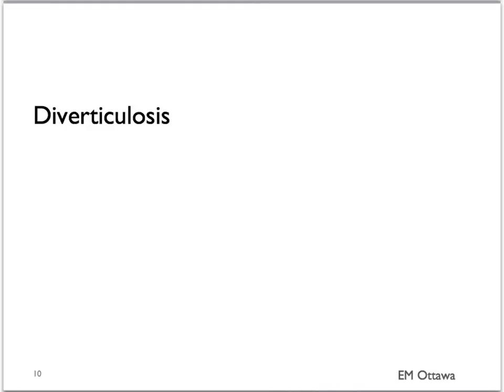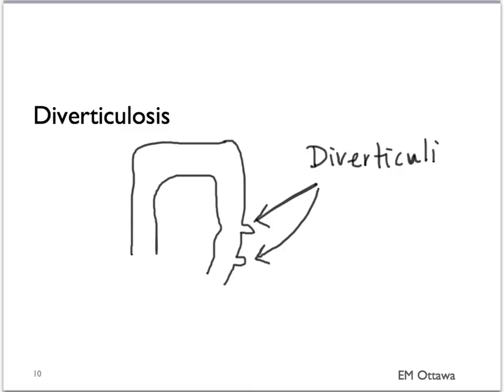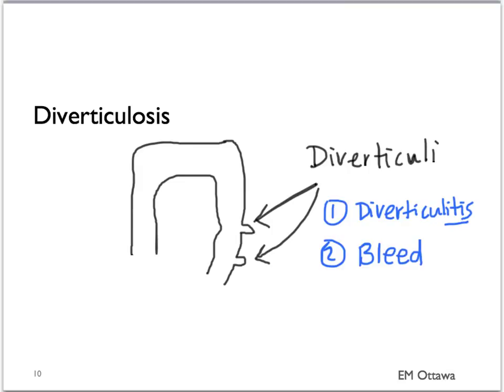The next cause of lower GI bleed is from diverticulosis, which is the most often seen cause of lower GI bleeds. Diverticuli are outpouchings of the colon mucosa and submucosa through weaknesses of the muscle layer in the colon wall. They can do one of two things: they can get inflamed, causing diverticulitis, or they can bleed, leading to lower GI bleeds. Diverticuli are mostly found in the sigmoid colon and therefore tend to present as bright red blood per rectum not mixed with any bowel movement.